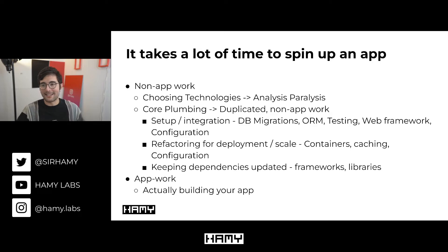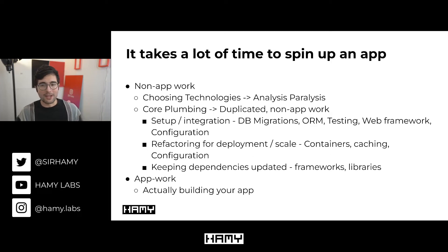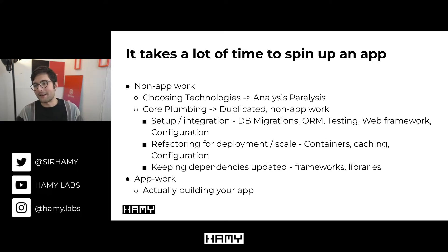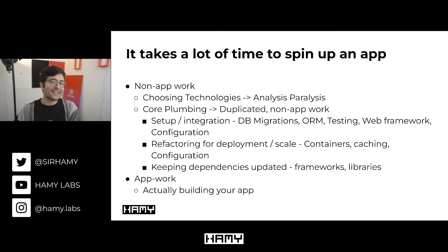Some common examples are things like choosing the actual technology — what front-end framework are you using, what back-end framework, what library for this specific use case — which leads to analysis paralysis and you don't actually get anything done. The next big one is core plumbing: actually setting up the technologies so you can use them. That means integrating with your database, integrating with your cloud host, getting testing up and running, making sure your configuration system works for different environments, and containerizing for deploy.